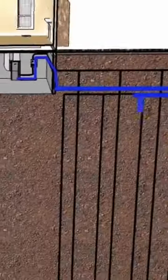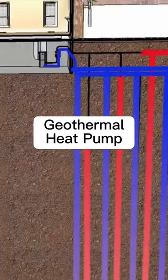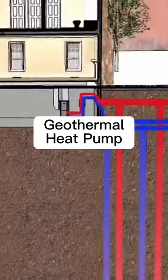When it's cold outside, the ground loop collects the heat from the earth and pumps it up through the Bosch geothermal heat pump to your home.